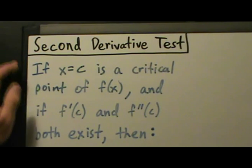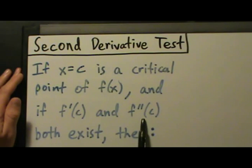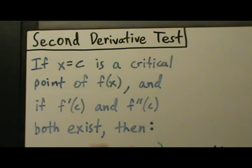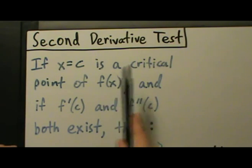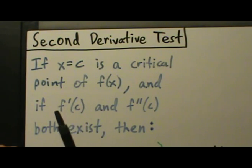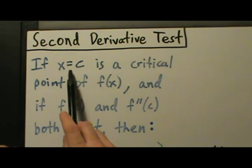The second derivative test says: if x equals c is a critical point of f of x, and if f prime of c and f double prime of c both exist, then we have a few cases to look at. So x equals c is a critical point of f of x — meaning there's a critical point at this value x equals c — and we also have the restriction that the first and second derivative both exist at x equals c.